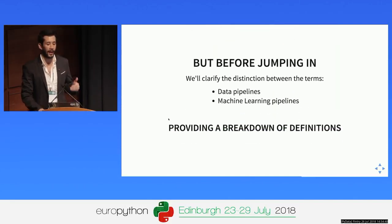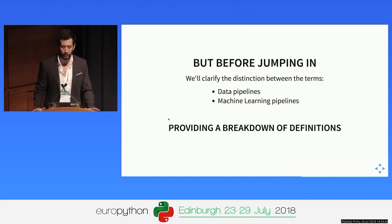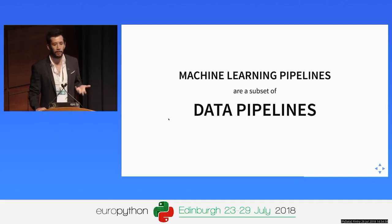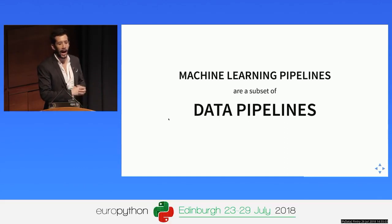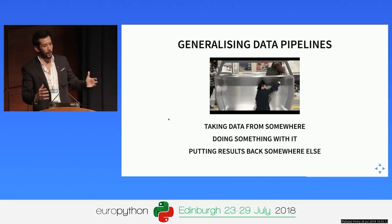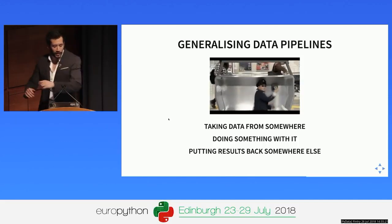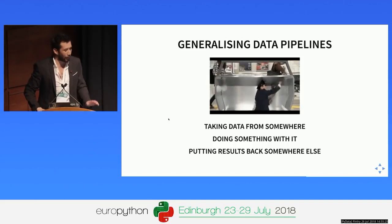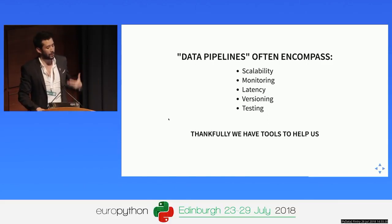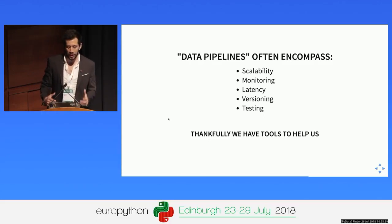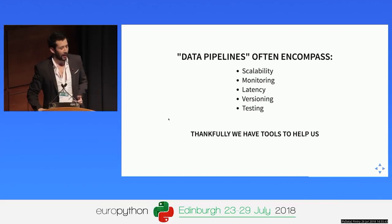Before jumping in, I want to clarify a distinction between data pipelines and machine learning pipelines. This is not concrete — it's kind of like a spectrum. From my perspective, machine learning pipelines are a subset of data pipelines, in the sense that data pipelines consist of ETL workflows, and running a prediction on a specific dataset could be one of those ETL executions. In a very broad sense, what data pipelines consist of is: you take data from somewhere, you do something with it, and optionally put the results somewhere else. It also encompasses concepts of scalability, monitoring, latency, versioning, testing, and a lot of complexity — fortunately, many people have the same problem.